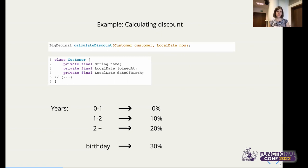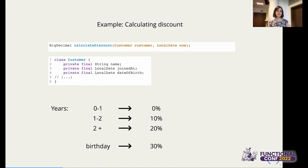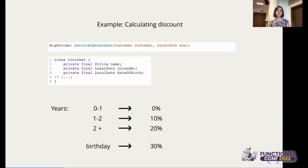What other properties could we think of? We could say that if we have two customers — one who joined earlier and one who joined later — then the discount for the older one has to be greater than or equal to the discount for the newer one. That always has to be true. Similarly, for the birthday discount, a property could be that if we have a customer whose birthday is today, their discount is always greater than or equal to the discount for any other customer.